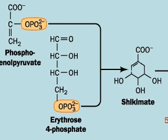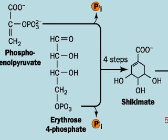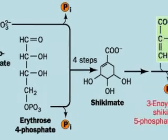Tryptophan synthesis starts with phosphoenolpyruvate (PEP) and erythrose-4-phosphate. In four reactions, these precursors lose their phosphate groups, join, and cyclize to form shikimate.